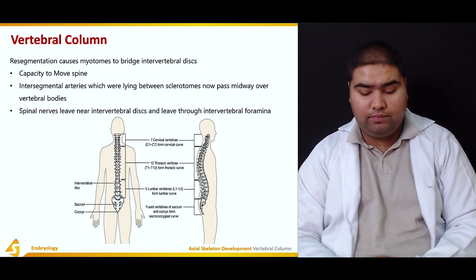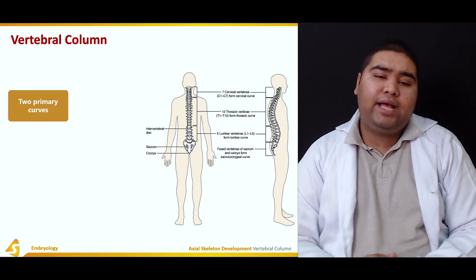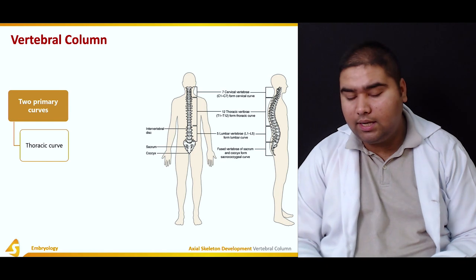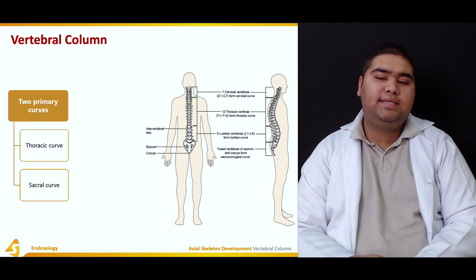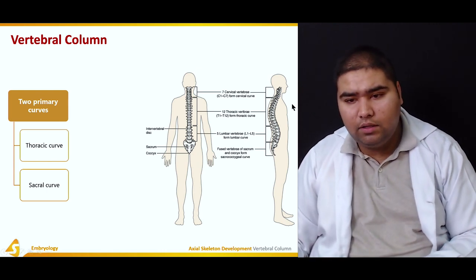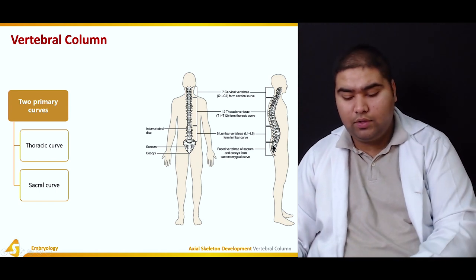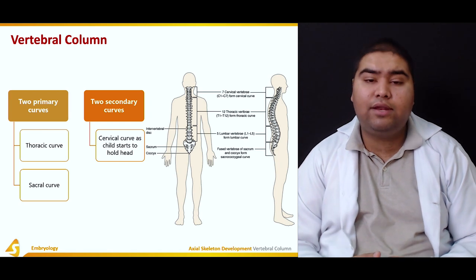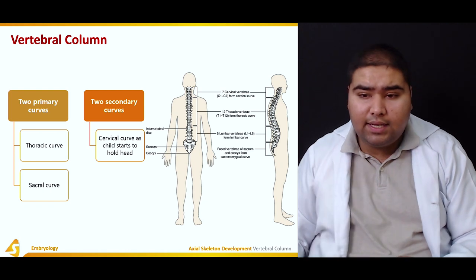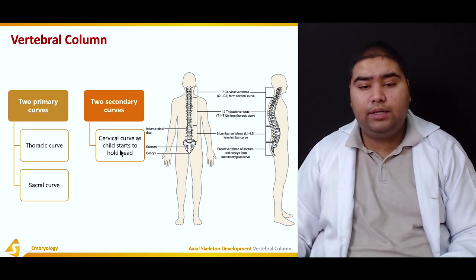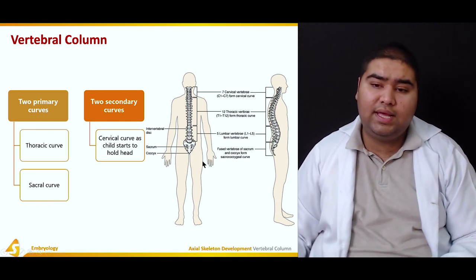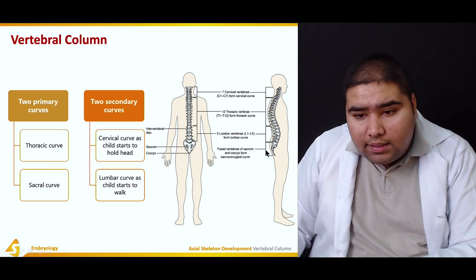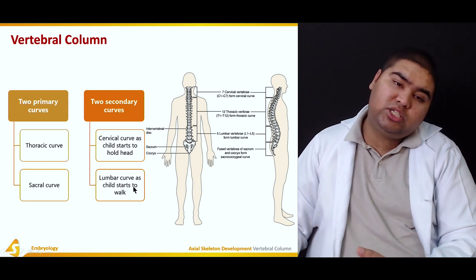There are two primary curvatures in the vertebral column: a thoracic curve in the thoracic region and a sacral curve in the sacral region. These are evident on the diagram. There are also two secondary curves acquired as the child progresses through life. The cervical curve is attained when the child starts to hold his head.